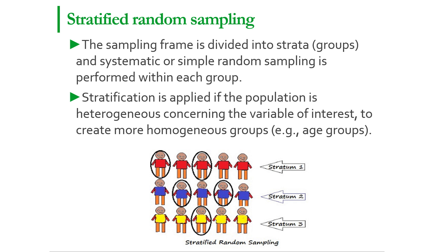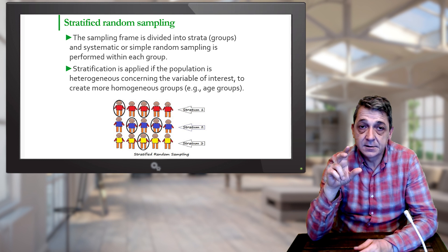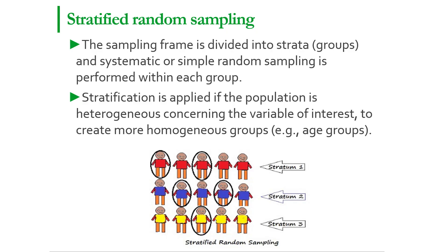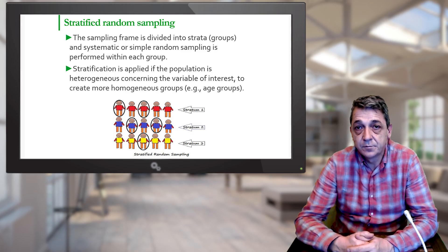For example, if the variance is higher in some strata, we can increase the sample size there and decrease it in others where the variance is not so expressed. By sampling a larger percentage of the population from all heterogeneous groups, we will get more precise data. The disadvantage of stratified sampling is that we have to prepare more than one sampling frame.